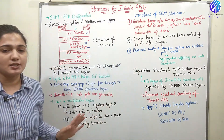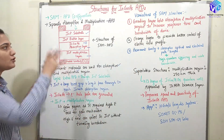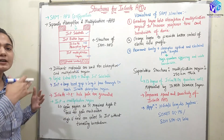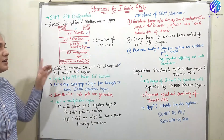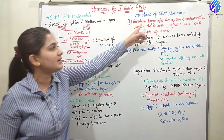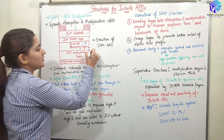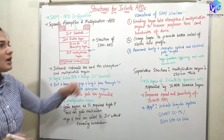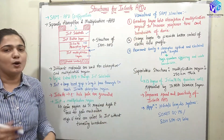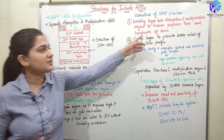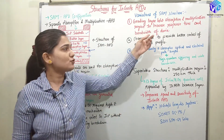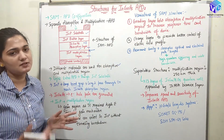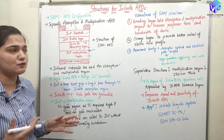What are the variations of the SAM structure? We can have numerous variations in this structure. We can use different layers and different structures inside it. First, we can use a grading layer in between the absorption and the multiplication region. Why? To increase the response time and also to increase the bandwidth. If we use a grading layer in between the absorption and the multiplication region, the response time as well as bandwidth is going to be enhanced.